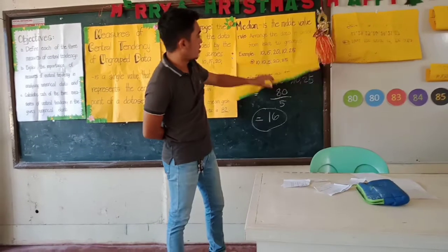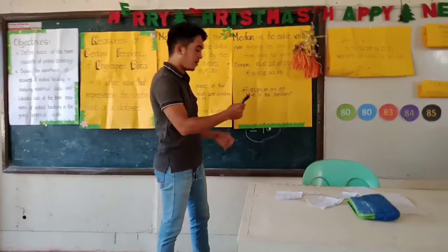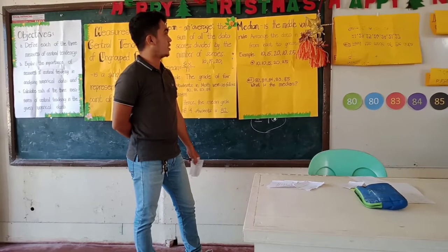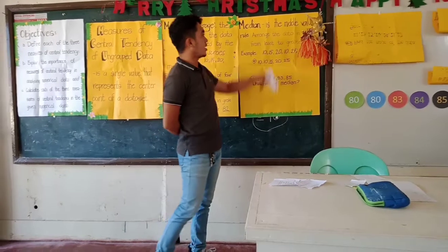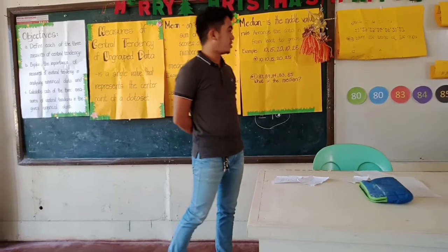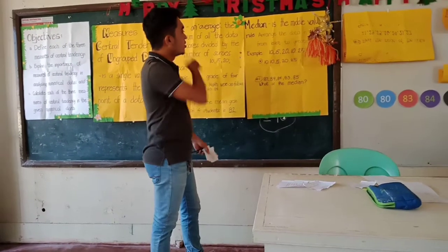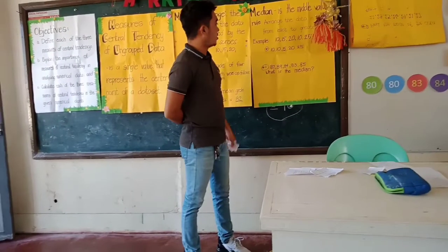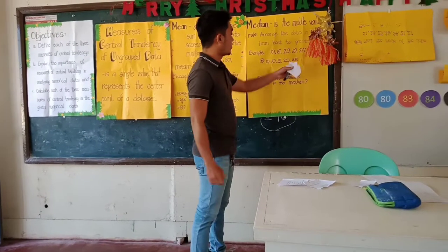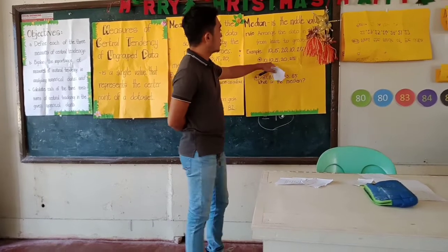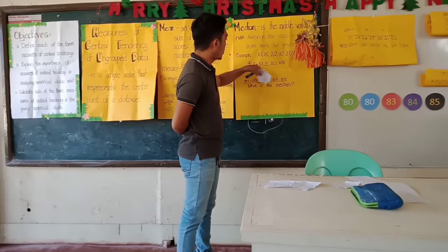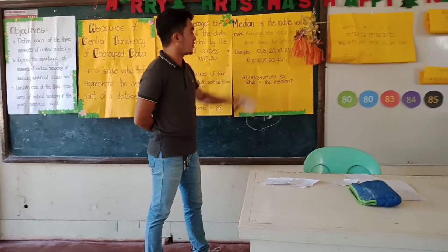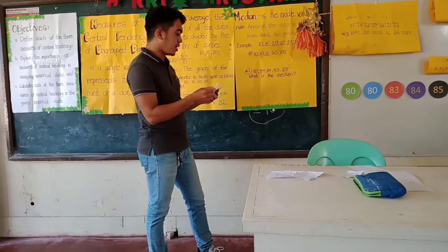Okay, so we're going to the next type of Measures of Central Tendency — the Median. The median is the middle value. There is a rule: when you find the median of data, arrange the data in order from least to greatest, just like what Miss Darrell did. So example: 10, 15, 20, 10, and 25. We apply the rule — 10, 15, 20, and 25 — and the median is 15, because 15 is in the middle. When we count 1, 2, 3, 4, 5, the middle is 15. So 15 is the median.